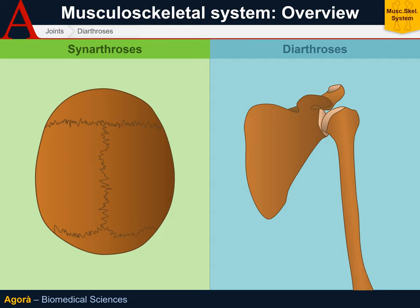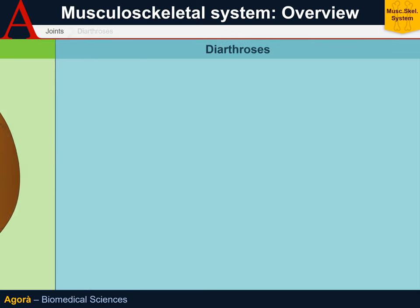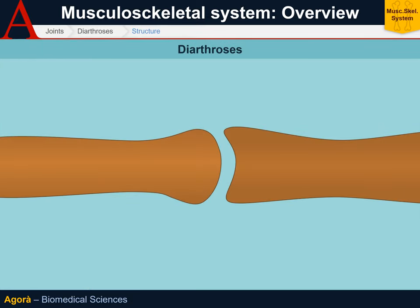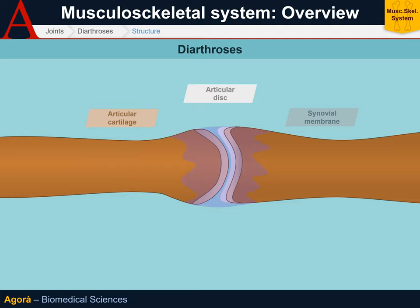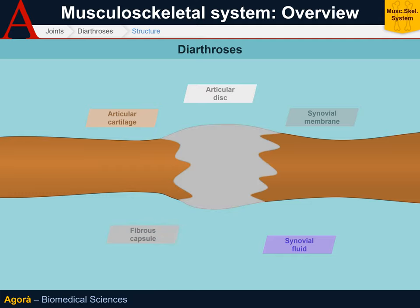The diarthroses, on the other hand, are mobile joints. The two articular surfaces are complementary — for example, one is spherical and the other is concave and contains the sphere. Where they intersect, they are covered by hyaline cartilage. There may also be a cartilaginous disc in the cavity aimed at increasing the cavity depth. The whole structure is held together by ligaments and by a capsule composed of an inner and an outer layer. The inner layer — more technically called the synovial membrane — produces synovial fluid, a liquid that fills the joint cavity and reduces friction between the articular surfaces. The outermost layer is fibrous connective tissue that provides physical resistance to the joint.